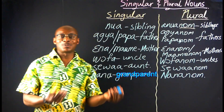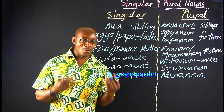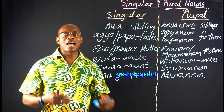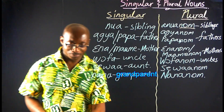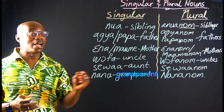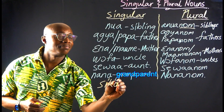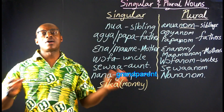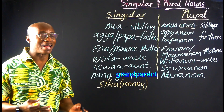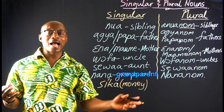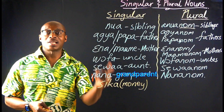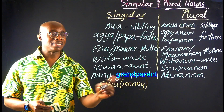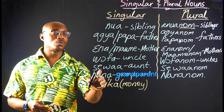Now we're going to the next group. In this group, plural and singular are the same — they don't change. First on the list, we have Sika. That is money. We don't have a distinct plural or singular — we say Sika. Whether it is one, two, three, four, or five, we say Sika.